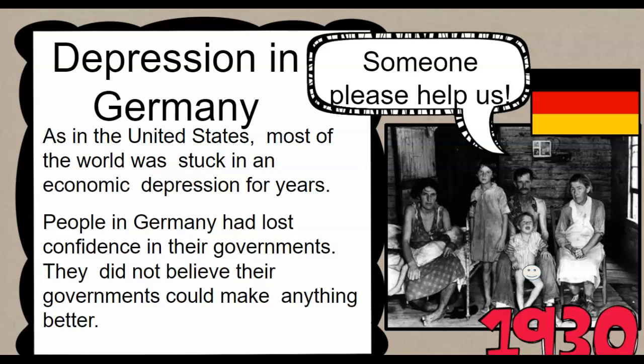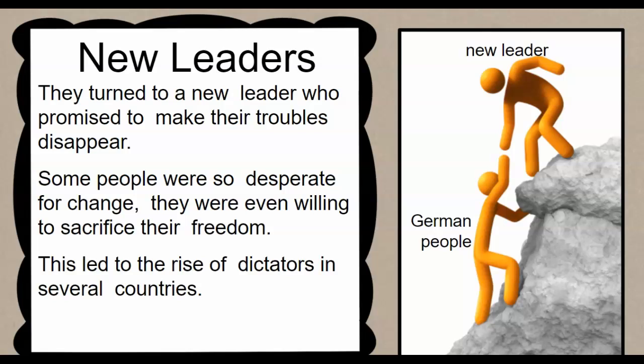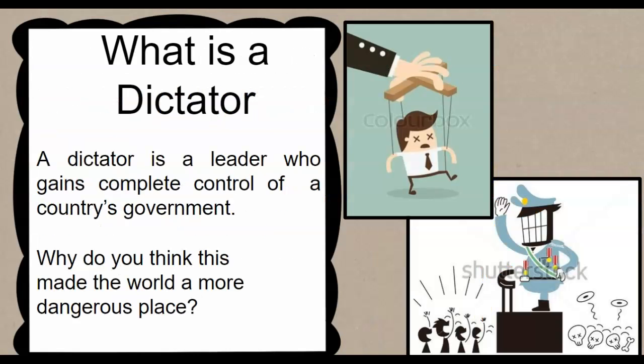They needed help any way they could get it. People were starving, not having jobs, being hungry. They were willing to follow anybody that had a clear plan for an improved future. So they turned to a new leader that promised to get them out of this economic hardship, bring back jobs, build up the economy and their military, and become a world power again. People were so desperate that they were willing to sacrifice their freedom, inviting in a leader who took complete charge as a dictator rather than being elected.